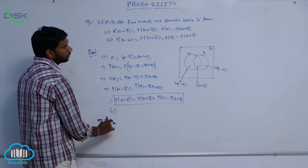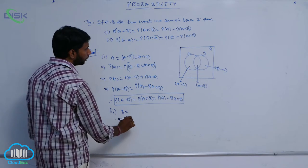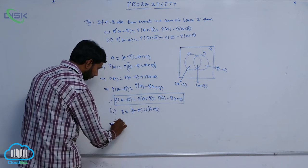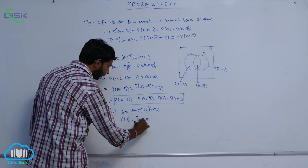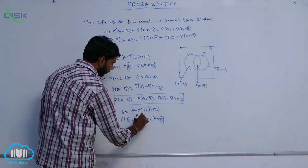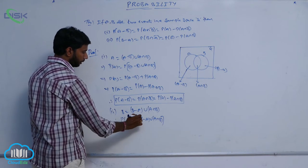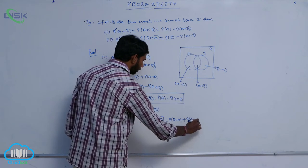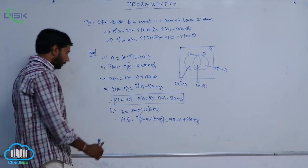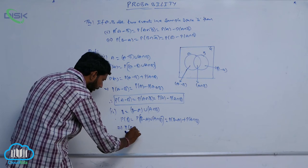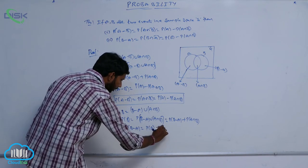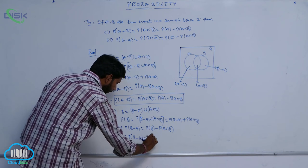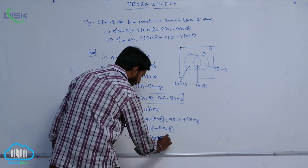For the second one, B can be written as (B minus A) union (A intersection B). So P of B is equal to P of B minus A plus P of A intersection B. Therefore, P of B minus A, which equals P of B intersection A bar, is equal to P of B minus P of A intersection B.